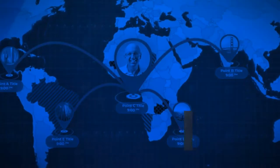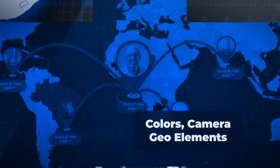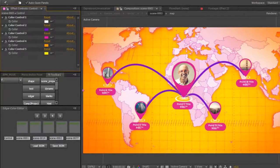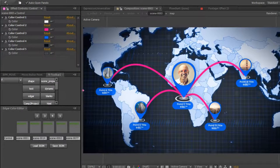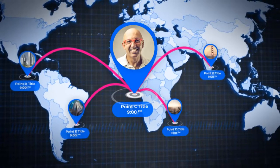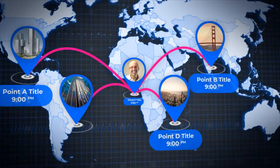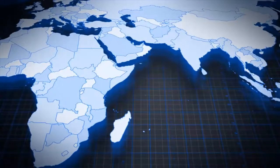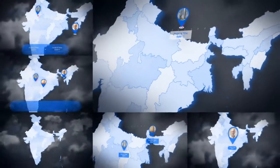Working with the template is easy because the project contains three types of settings. The first type allows you to customize the colors of the map individually for your design. The second type adjusts the position of geo marks and routes on the map. The third type controls camera movement over the map, so you can come closer to any point with ease.